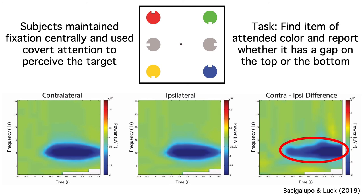By using time frequency analysis, Felix was able to see this contralateral suppression of alpha band activity that was invisible in the conventional ERP waveforms. We had done dozens of N2PC experiments over the years, and this contralateral alpha suppression was probably there in most of them, but we couldn't see it because it's invisible in a conventional average ERP.